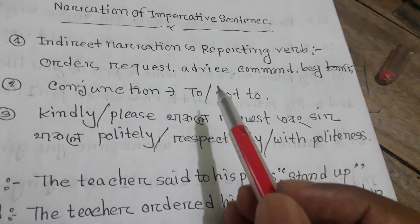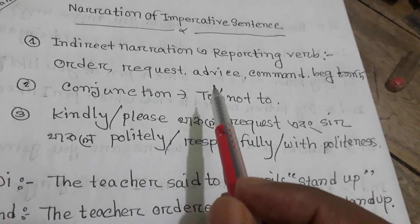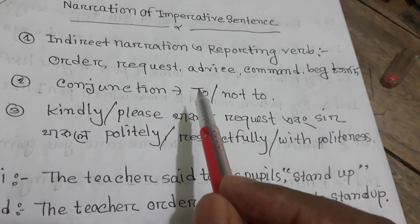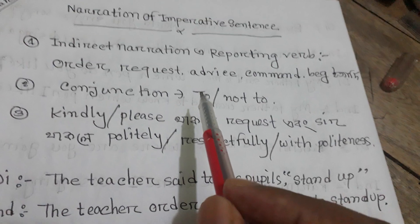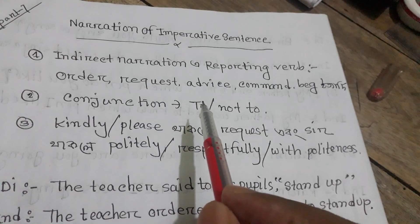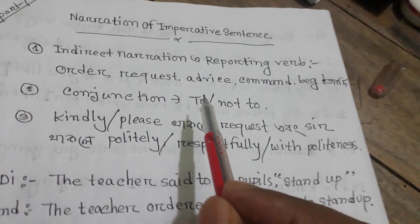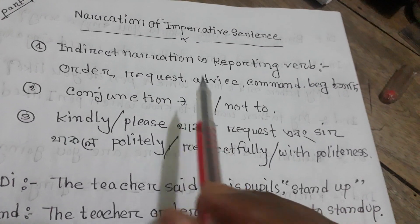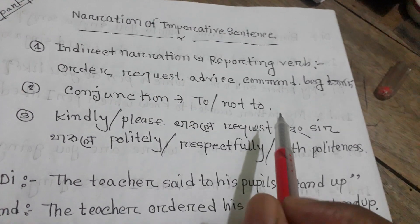The narrative of the imperative sentence involves a change in the indirect narration, specifically a change in the reporting verb. The indirect narration uses a reporting verb to convey the original speech.